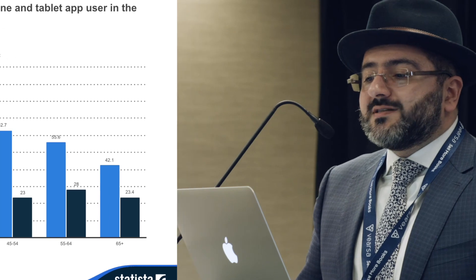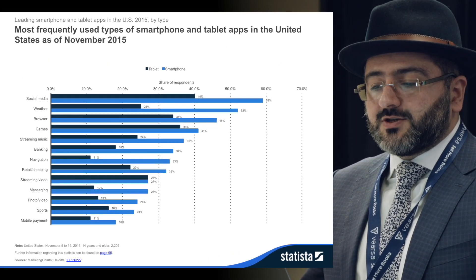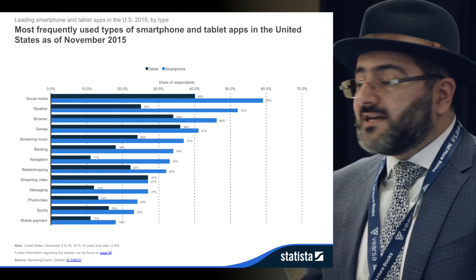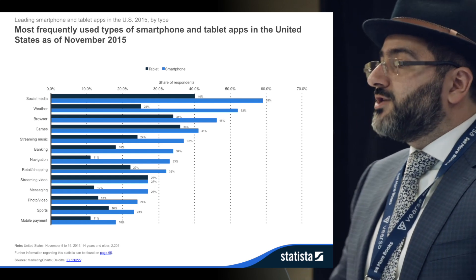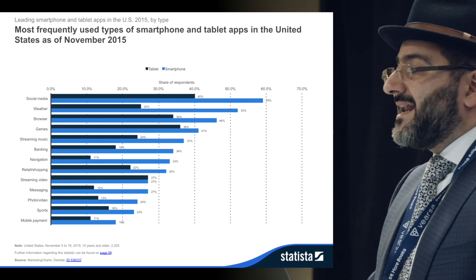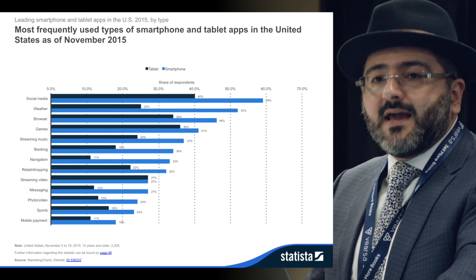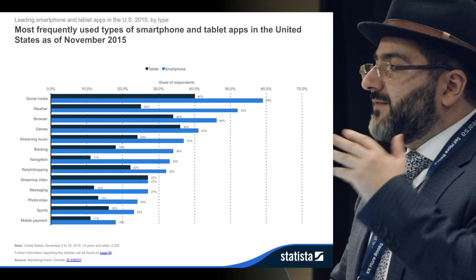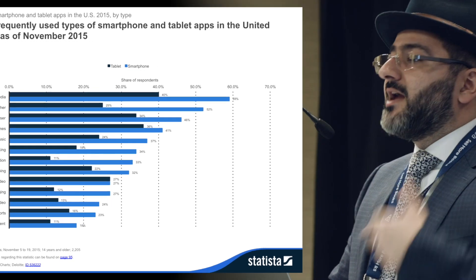The most frequently used types of smartphone and tablet apps in the United States as of November 2015 are: social media, weather, browser, games, streaming music, banking, navigation, retail shopping, streaming video, messaging, photo/video, sports, and mobile payment. Reading is not in there. That means your target niche is not through iBooks or just an e-book platform alone — your e-book has to become an engine for social media. It has to be out on Facebook Messenger, Facebook, WhatsApp, and those types of apps.